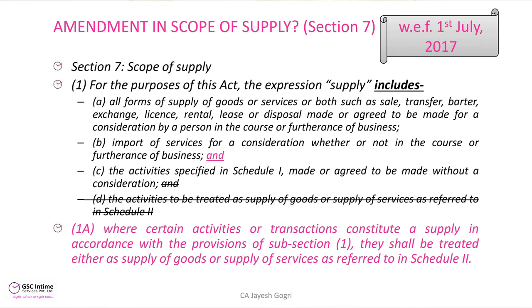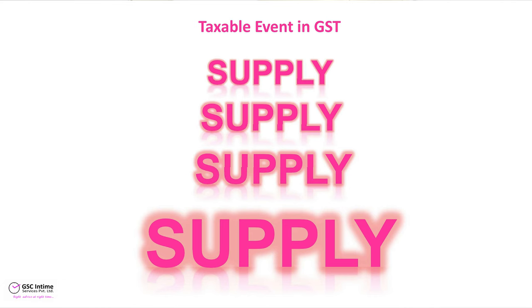In the first situation, presence of business as well as consideration both were required. For import of services, the requirement of business was not there — only consideration was necessary. In the third scenario, it was exactly reverse: consideration is not required, but it should be in the course or furtherance of business. The last sub-clause in Section 7(1) says activities defined in Schedule 2 will be treated as supply of goods or services as defined in that schedule.